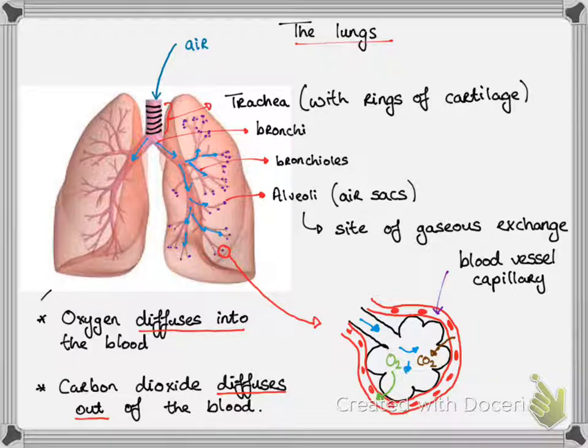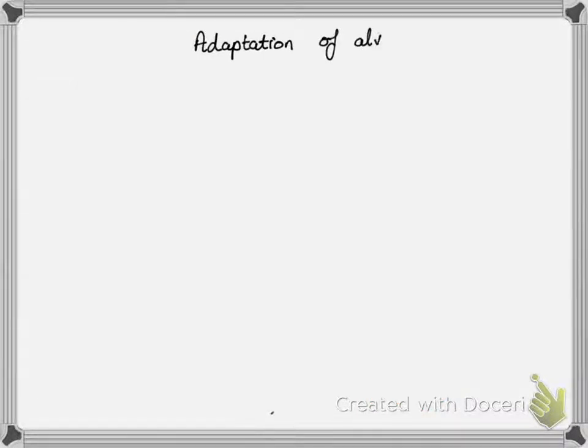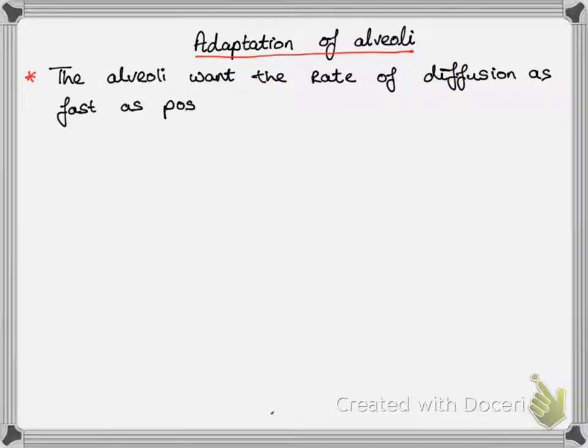And that is essentially gas exchange. It's the exchanging of carbon dioxide for oxygen. Now there are adaptations for alveoli to do this function. So the alveoli want the rate of diffusion to be as fast as possible.